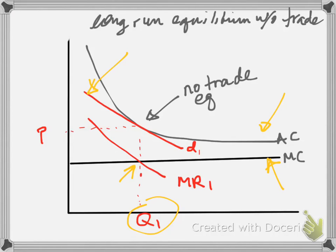The firm then looks to the demand curve to see how much it should charge for Q1, because the whole point of being a monopolist is you charge a higher price than your cost. That price is equal to average cost, so there are no profits. That's the long-run equilibrium for the monopolistic competition model — price must equal average cost, meaning the demand curve is tangent to the average cost curve.